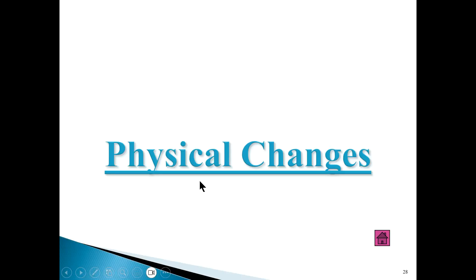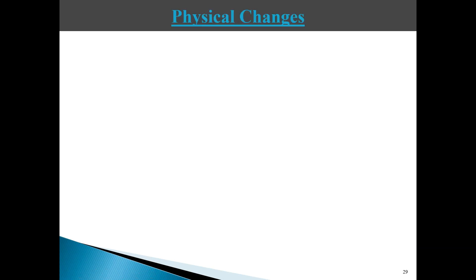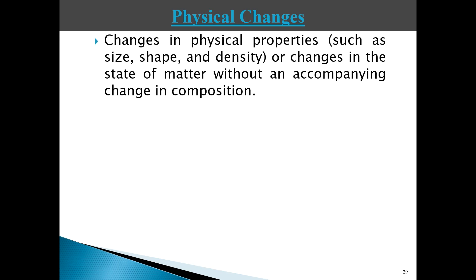If you understand the difference between physical and chemical properties, then understanding physical changes and chemical changes should be straightforward. A physical change is a change where there is no change observed in the composition of the substance. The change involves things like changes in shape, size, density, or state of matter.